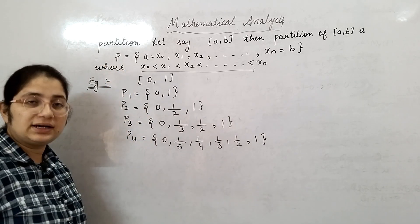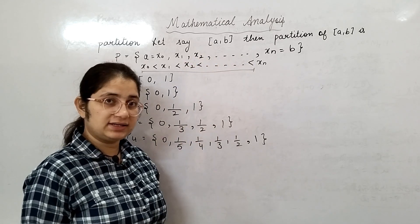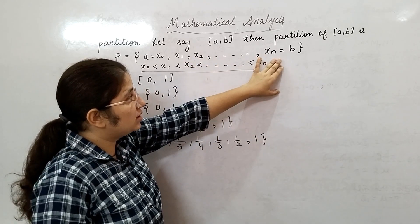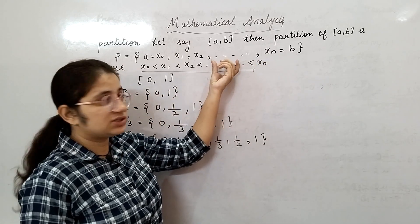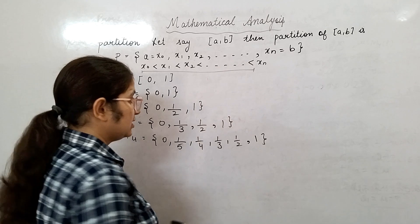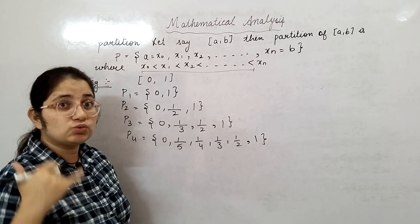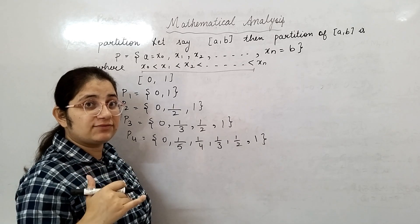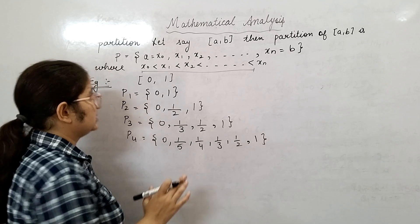So this is your partition. And you can clearly see that in this partition, the points are finite - total n+1 points you have. So the number of points in this partition will always be finite. But for any interval I give you, you can make infinite partitions. However, the number of points in every partition will be finite.